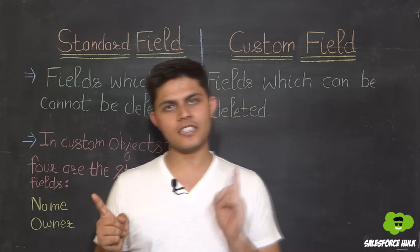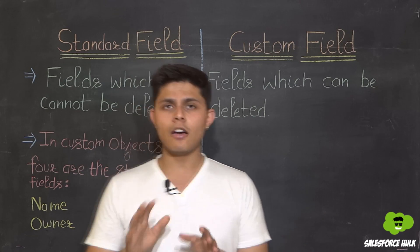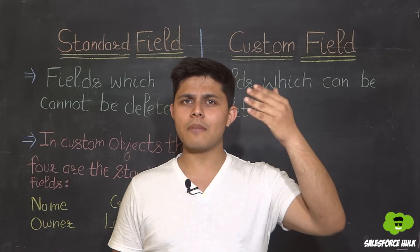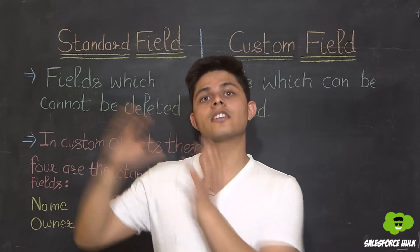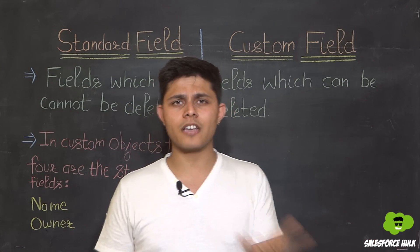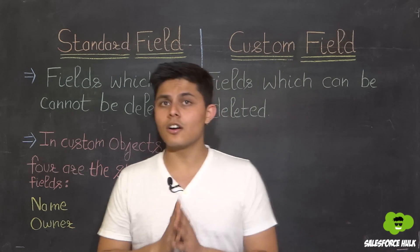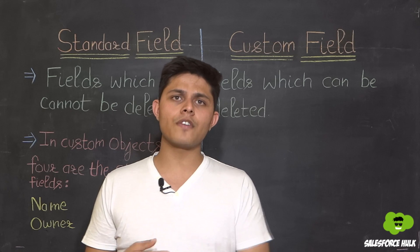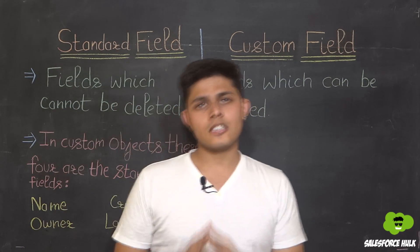Similar to objects, fields are also of two types: standard fields and custom fields. Standard fields cannot be deleted, whereas custom fields can be deleted. In a standard object like account, there are many standard fields you cannot delete, but there are also fields you can delete — those are custom fields. In a custom object like candidate, there will be four standard fields automatically created: name, created by, owner, and last modified by. You cannot delete those and they are created automatically. If you want to store different attributes in that custom object, you create a custom field, which can be deleted.